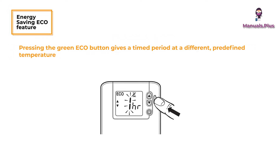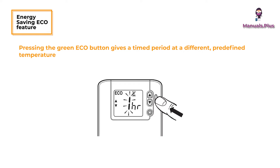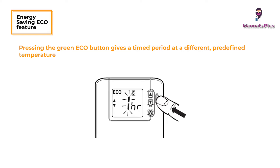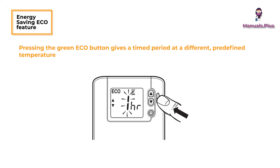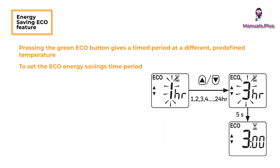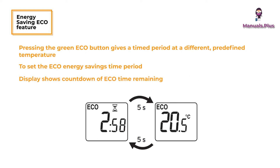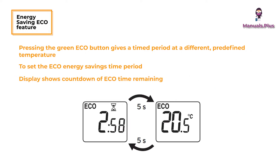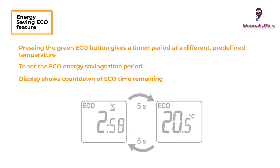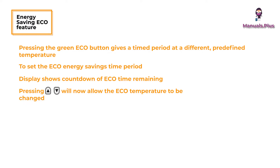Pressing the green eco button gives a timed period at a different predefined temperature. To set the eco energy savings time period, the display shows a countdown of eco time remaining. Pressing one of the given buttons on the Honeywell DT90E digital room thermostat will allow the eco temperature to be changed.